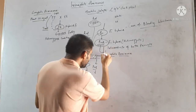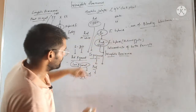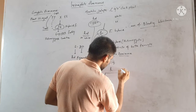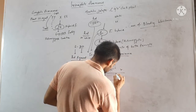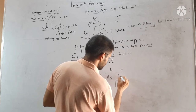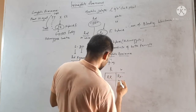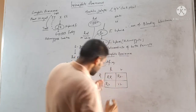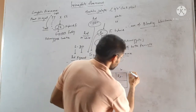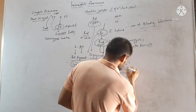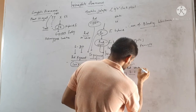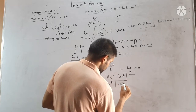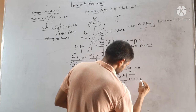But it is not blending inheritance. Why not? When we self this F1 hybrid, we get: RR, Rr, Rr, and rr. If it were complete dominance, the ratio must be 3:1 — three red and one white. But here we get red, pink, pink, and white. The ratio is 1:2:1 — one red, two pink, one white.